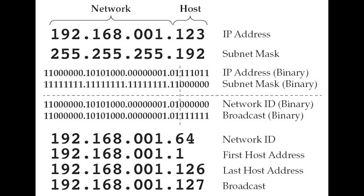Now let's get into how you would actually subnet an IP address. To subnet, you will need to apply a subnet mask. A subnet mask is another 32-bit number created by setting host bits to all zeros and setting network bits to all ones. The subnet mask looks just like an IPv4 address. It has a very specific structure: it begins with a sequence of ones and then turns into a string of zeros when converted into binary. The part with ones is the network part of the mask, while the string of zeros is the host part.